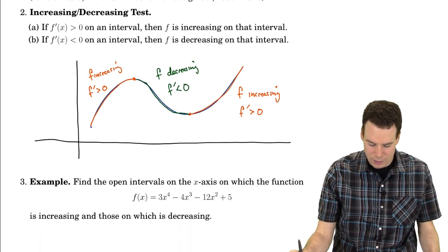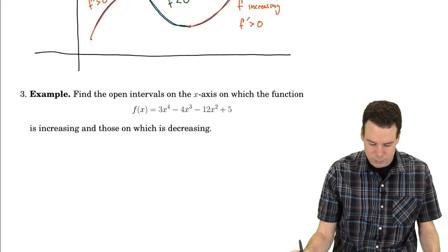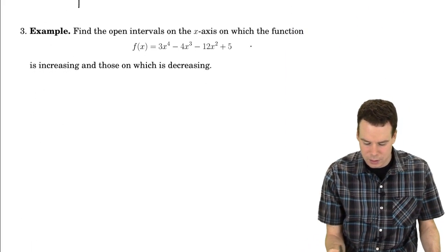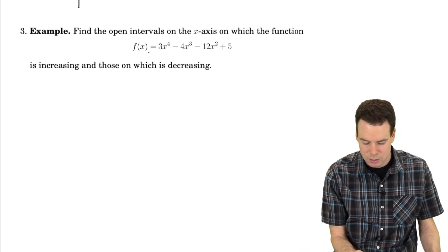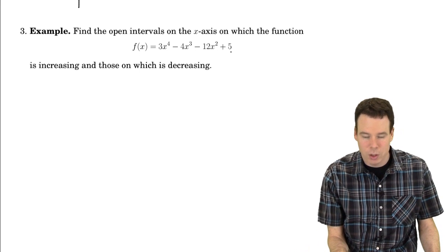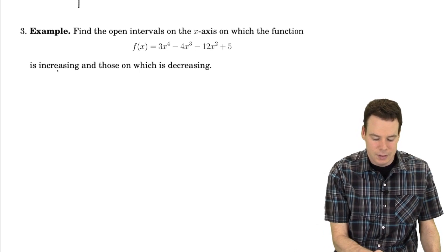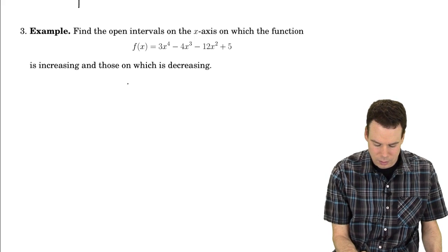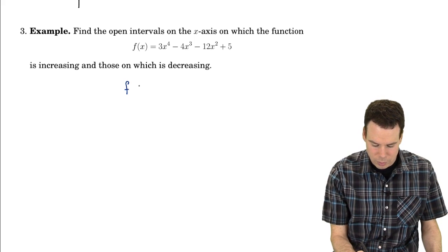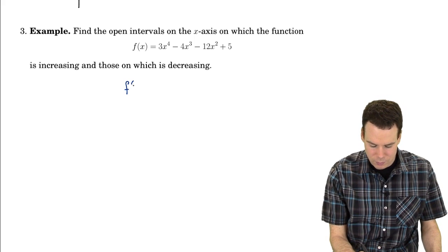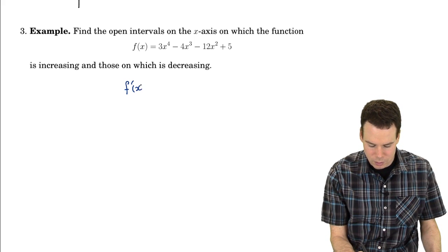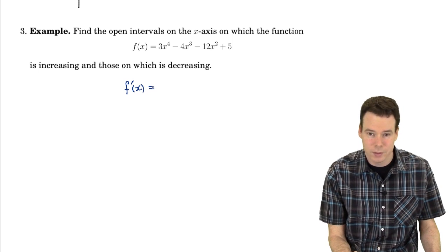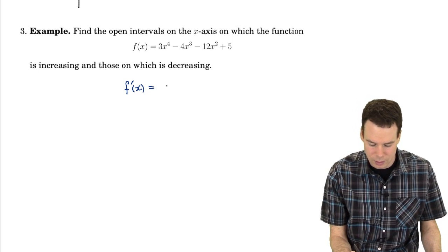So let's go ahead and do that. Find the open intervals on the x-axis for which this degree-four polynomial is increasing and those on which it's decreasing. By what we did above, we just want to look at what the sign is of the derivative — where is it positive, where is it negative?